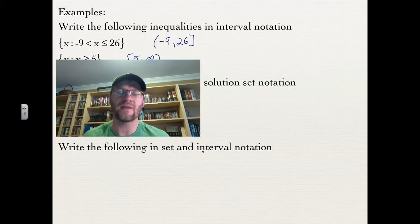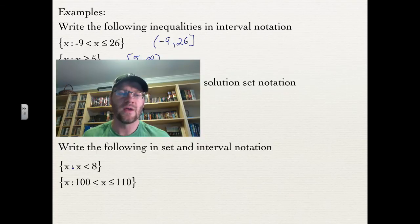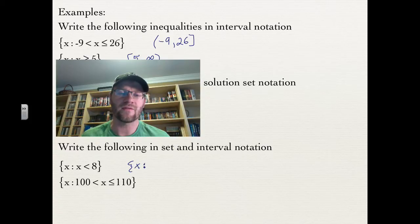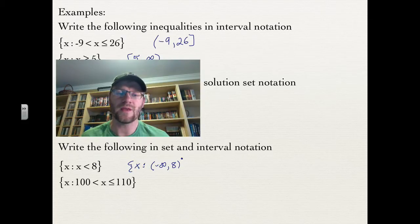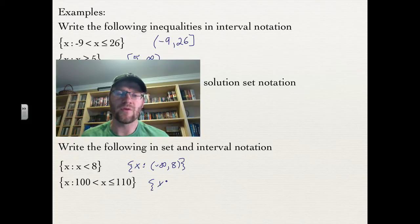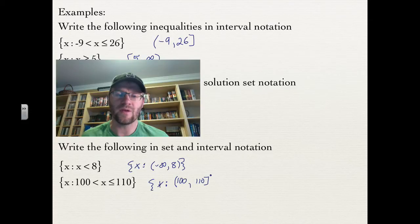You can also combine set and interval notation. For x such that x is less than 8, you still write x colon, then express the condition as an interval: negative infinity to 8 with an open bracket. For x between 100 and 110 where 110 is included, you write x colon, then open bracket 100, 110 with a closed bracket.